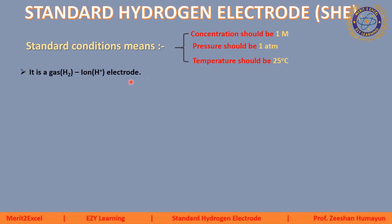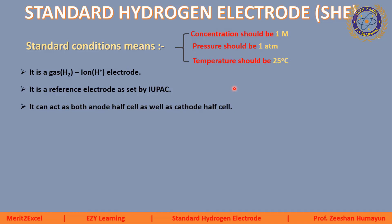Standard hydrogen electrode se related kuch important information: it is a gas ion electrode — is mein gas kya hai hydrogen gas, aur ion kya hai hydrogen ion, kyunki hydrogen electrode potential hai isliye hydrogen gas aur hydrogen ion ko hi use kiya gaya. Yeh ek reference electrode ke taur par use kiya jata hai jo IUPAC ne set kiya tha, ke kisi bhi metal ke electrode potential ko maaloum karne ke liye is hydrogen electrode potential ko reference mana jaayega.